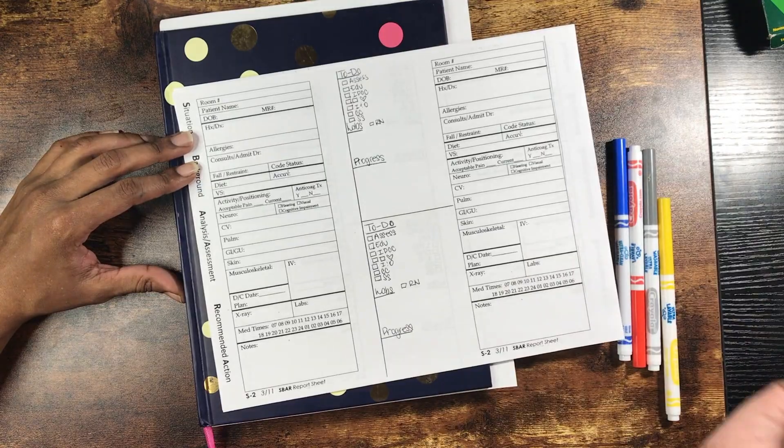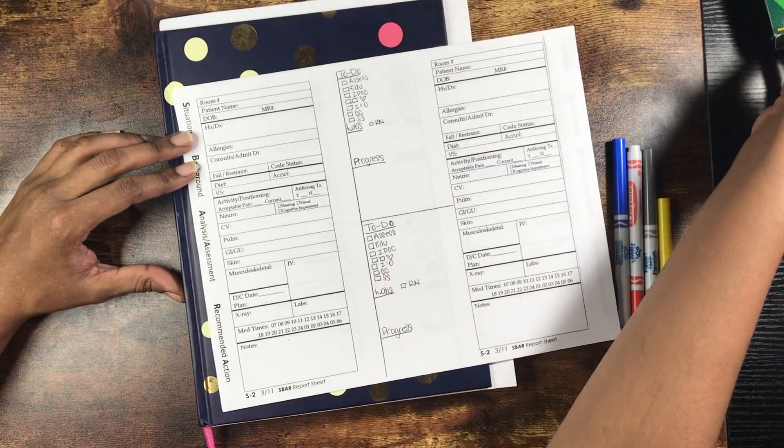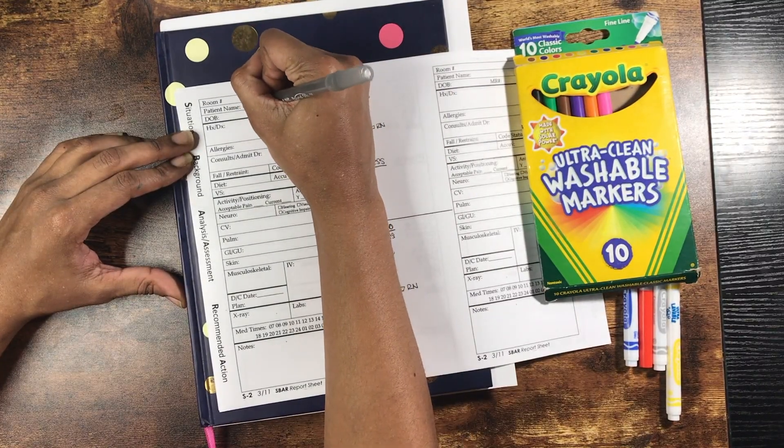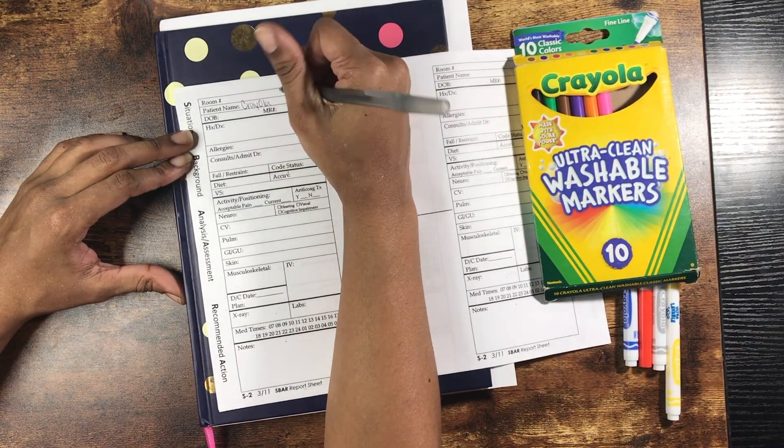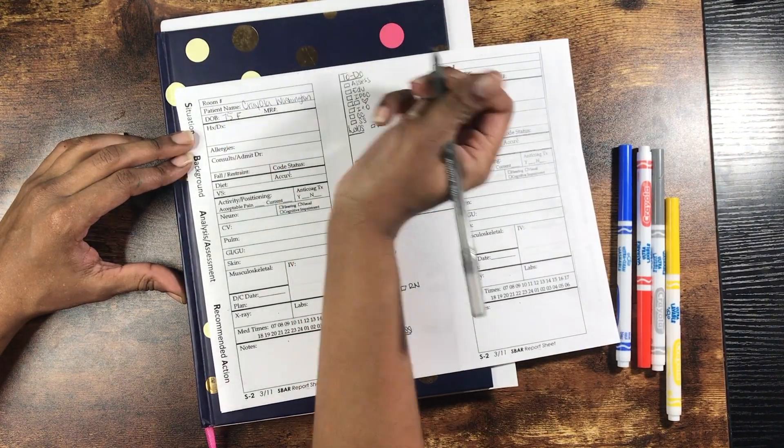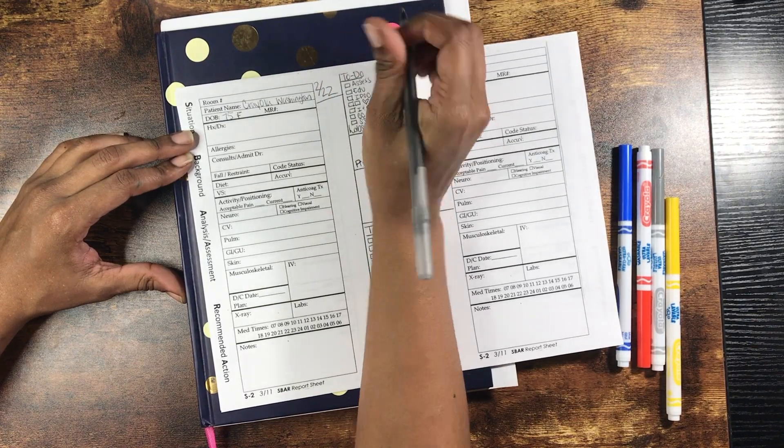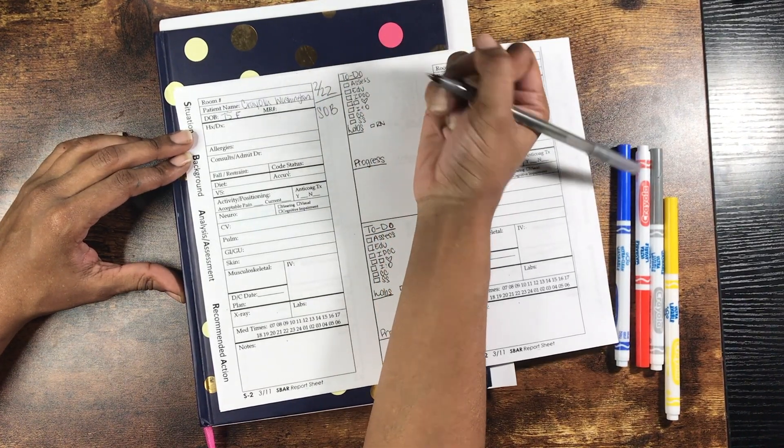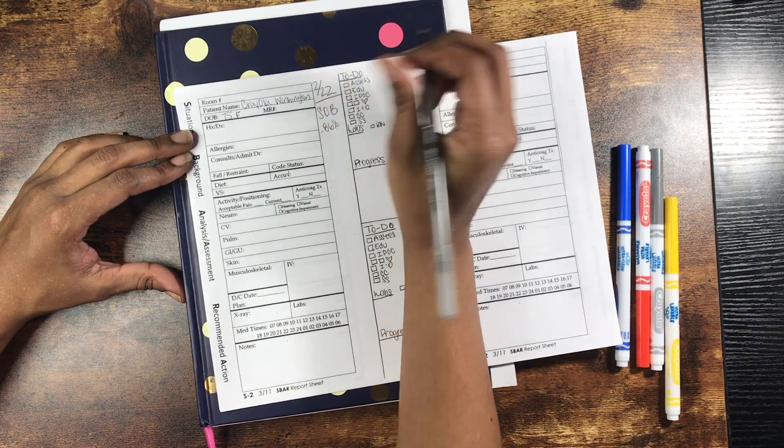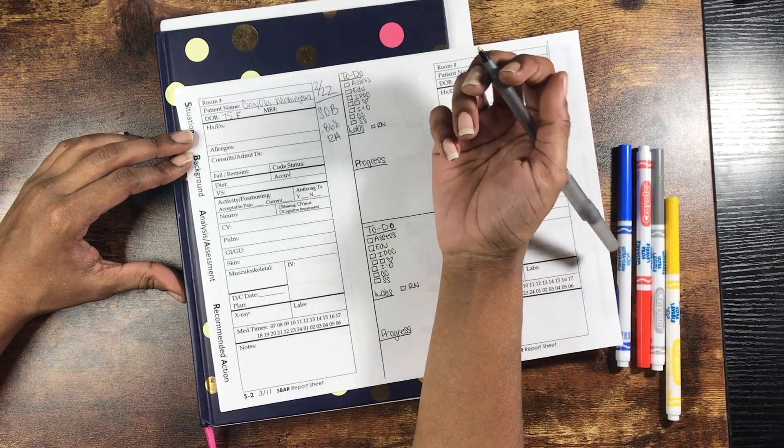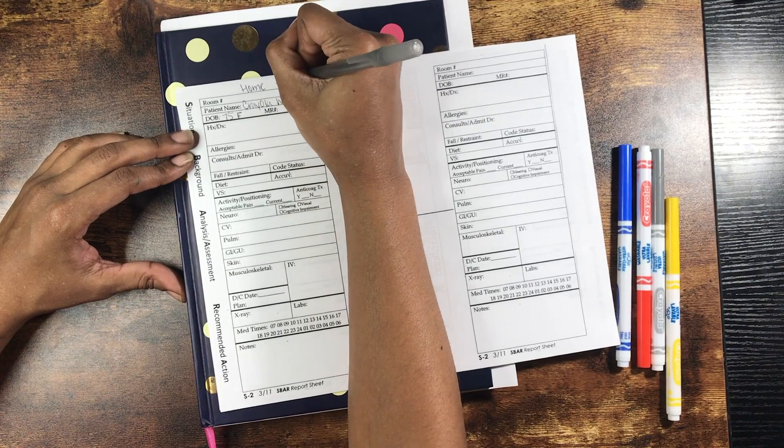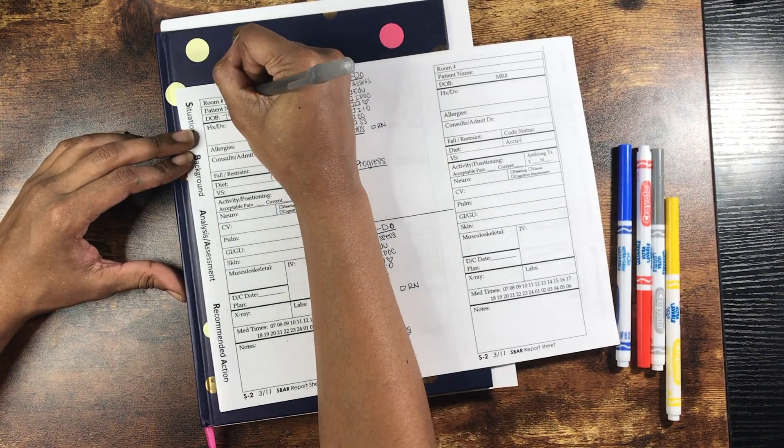I'm going to create a mock SBAR with a completely made-up patient and give report to myself while writing in the appropriate section. Let's take the name Crayola Washington. So the situation is Crayola is a 75-year-old female, got to the hospital on 2-22. EMS found her in her own urine at home alone when her daughter couldn't reach her. She was having shortness of breath, oxygen saturation was found to be at 86% on room air and was having altered mental status.